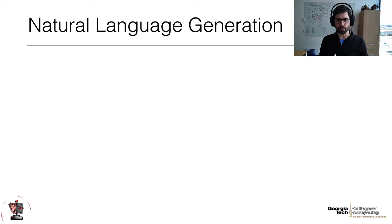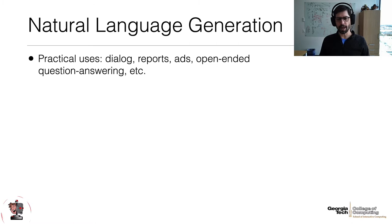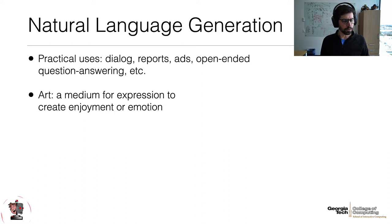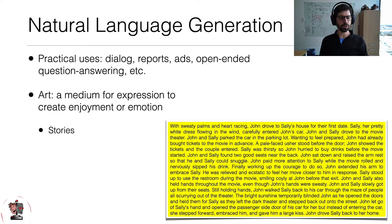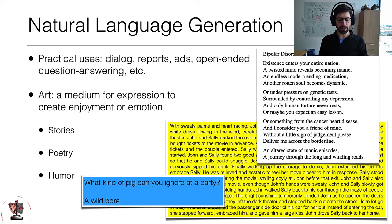Natural language generation is a topic you've probably come across, involving many practical uses including dialogue generation, report generation, ads, and open-ended question answering. But for today's tutorial, we're talking about art — a medium for expression, to create enjoyment or emotion. There are forms of art in the text modality: stories, poetry generation, and humor generation. These are the three we'll talk about today.